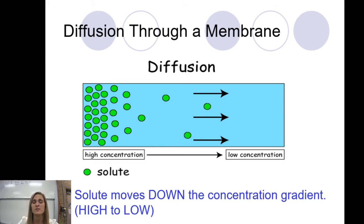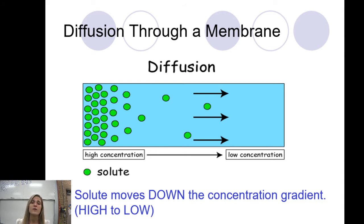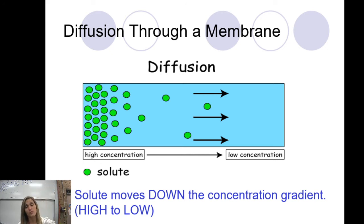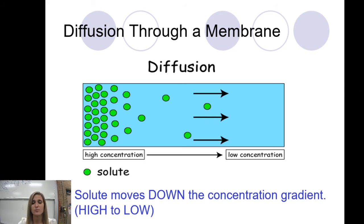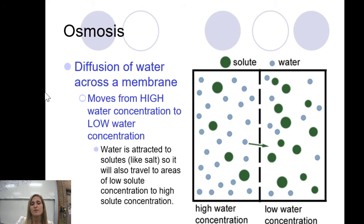Moving down the gradient means going from high down to low. When you hear 'down a concentration gradient,' you're going from an area of high concentration to low. It shows it moving horizontally, but the idea is high to low, so you're going down. The next type of passive transport is called osmosis.